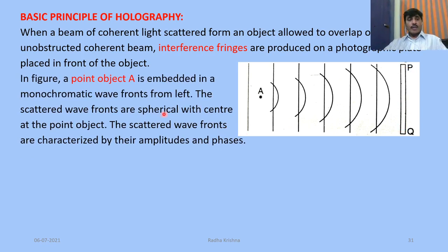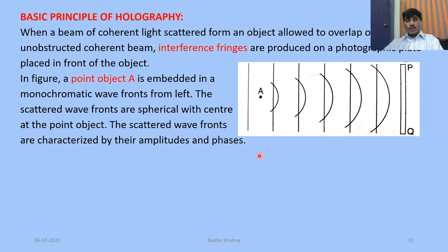In the figure, a point object A is embedded in monochromatic wavefronts from the left. The scattered wavefronts are spherical with center at the point object. The scattered wavefronts are characterized by their amplitudes and phases.